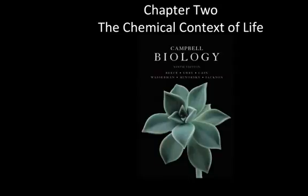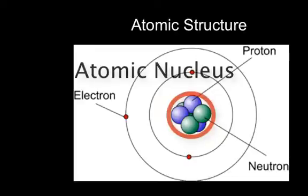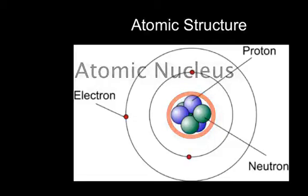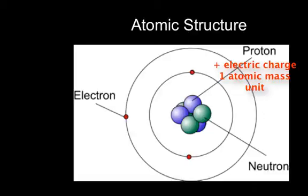Let's start with reviewing some basic chemistry. The basic model of the atom has a very small atomic nucleus that contains the protons and, with the exception of normal hydrogen, neutrons. Protons have a positive electric charge and a mass of one atomic mass unit.